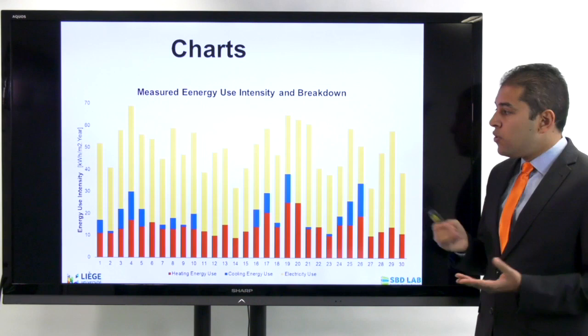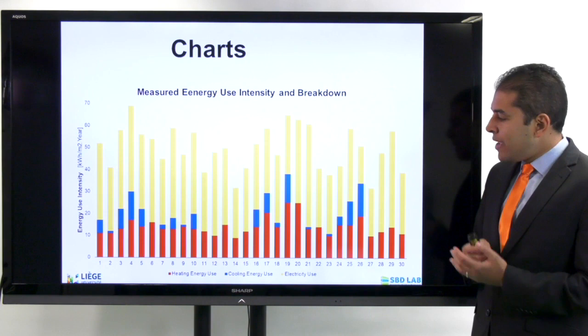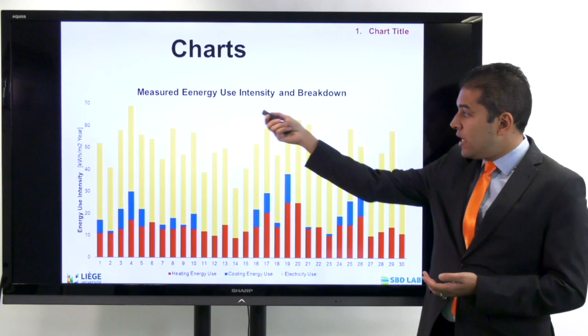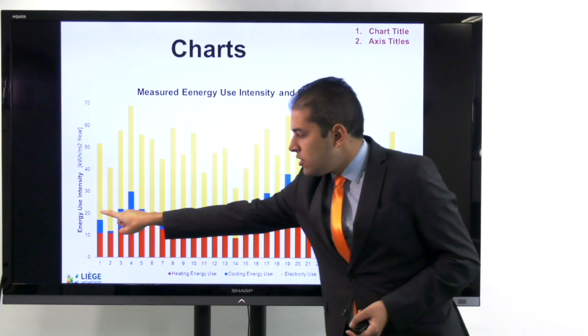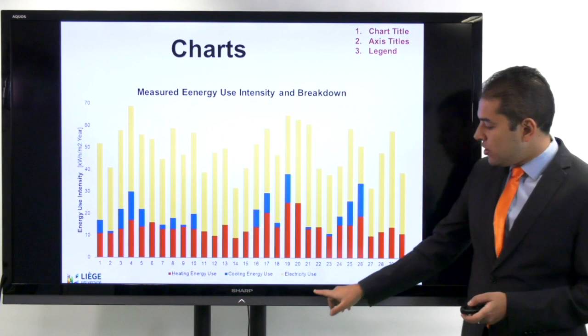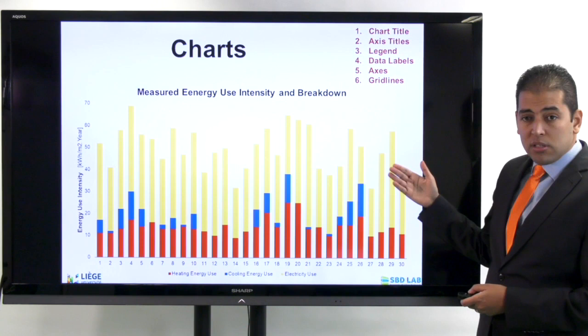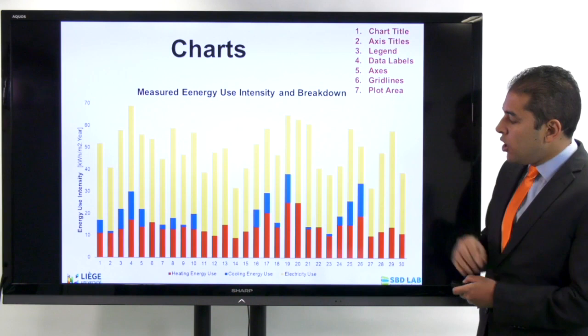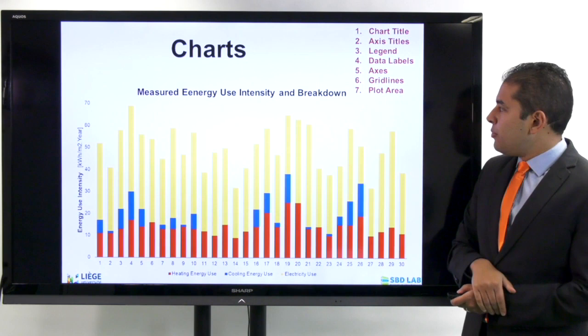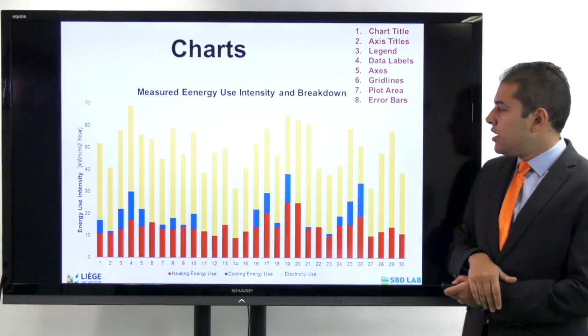When it comes to charts, what are the best practices? This is an example of an ideal chart. I have several components that make this graph ideal. First of all, I have the chart title, which is clearly mentioned. I have an axis title — this is the Y and this is the Z axis. I have a legend explaining my coloring, and I have data labels provided. I have also axis, and grid lines that are avoided — it's always recommended to avoid grid lines. And I have a plot area. I always put axis titles with the units in an appropriate way, and I can add error bars if needed.